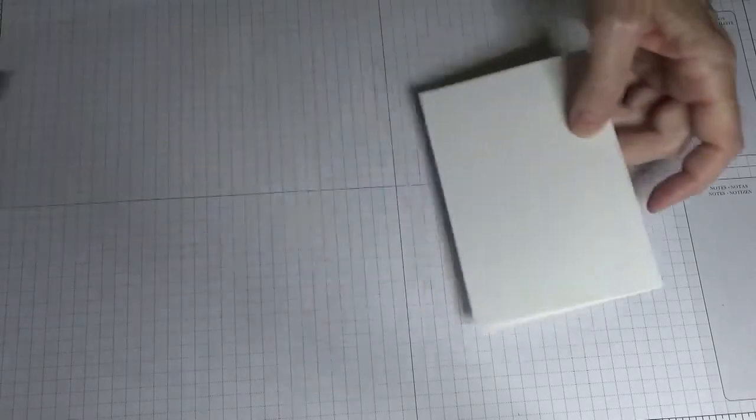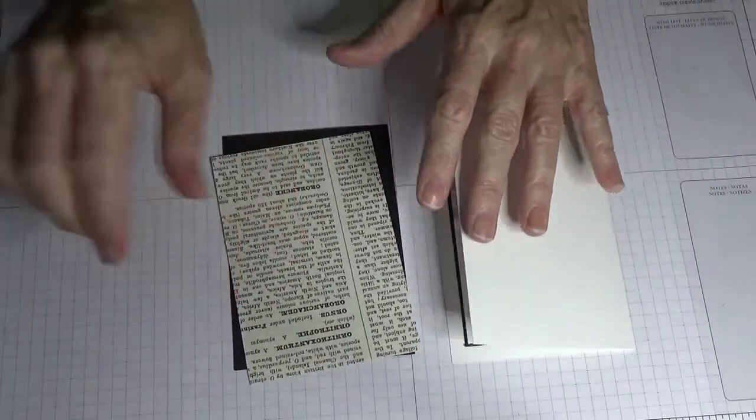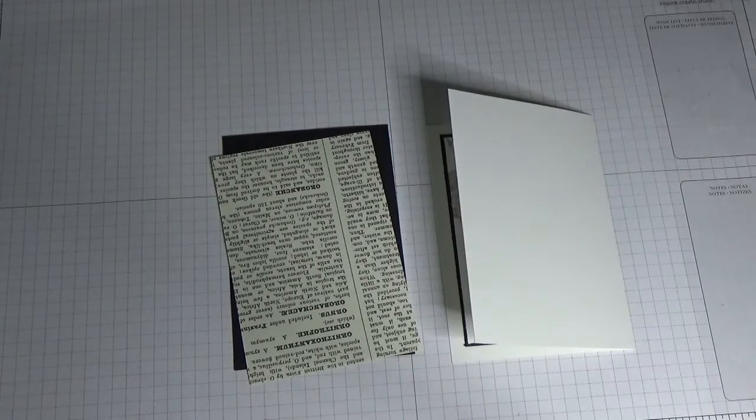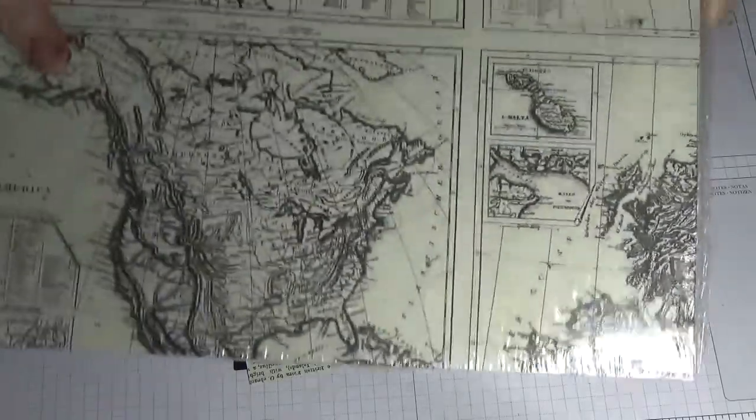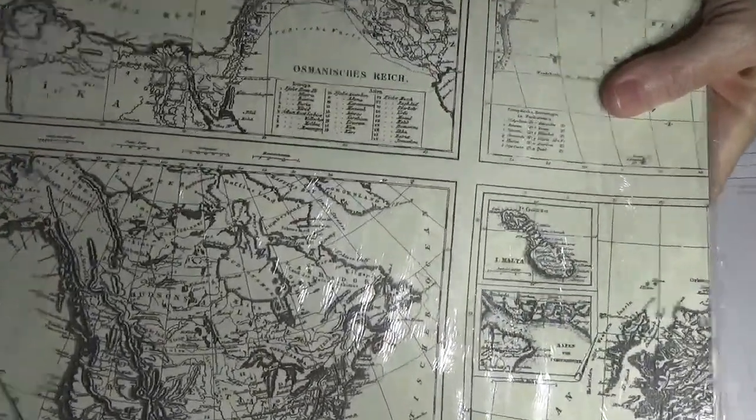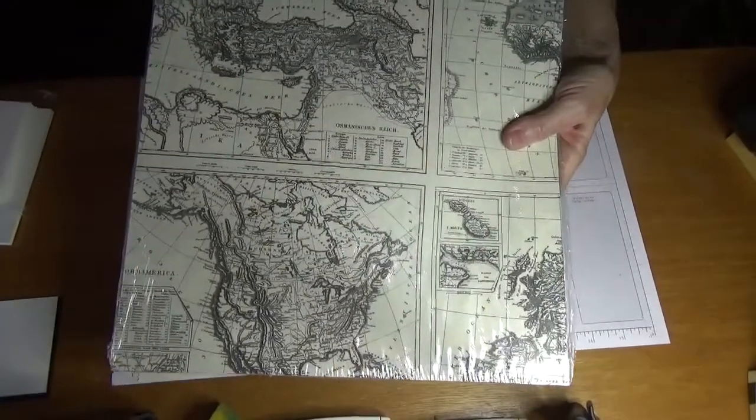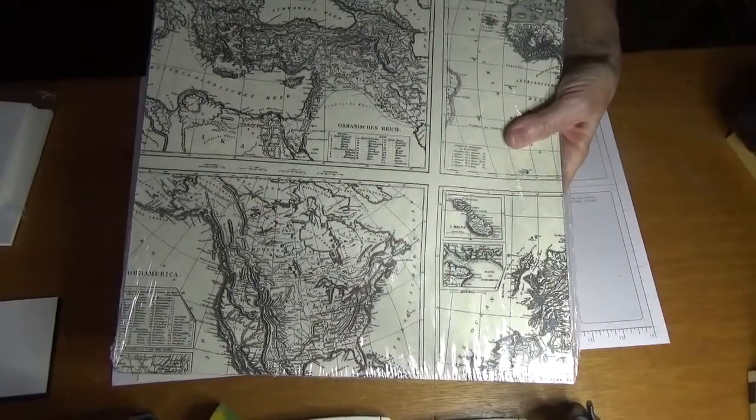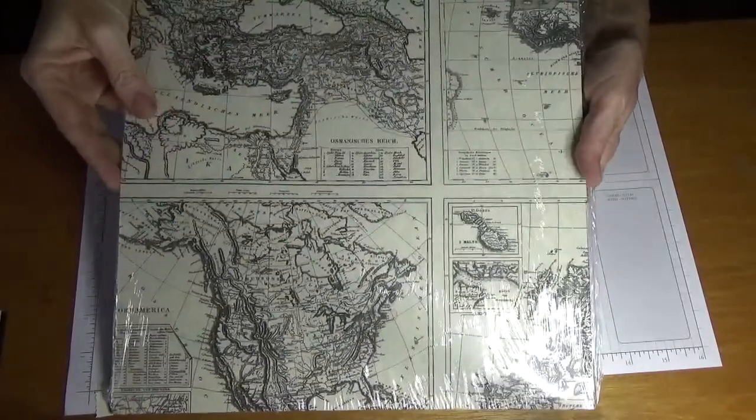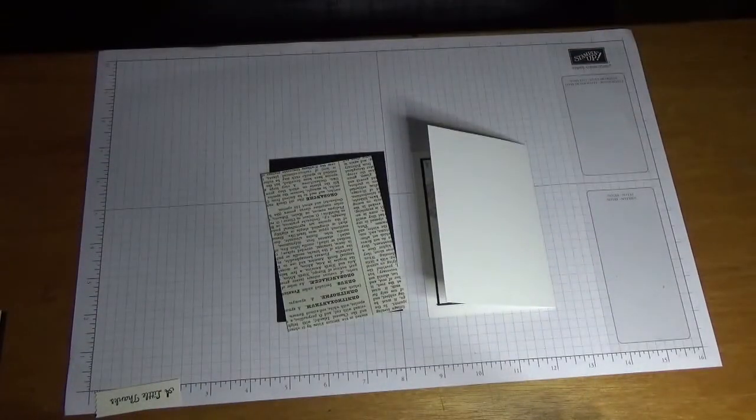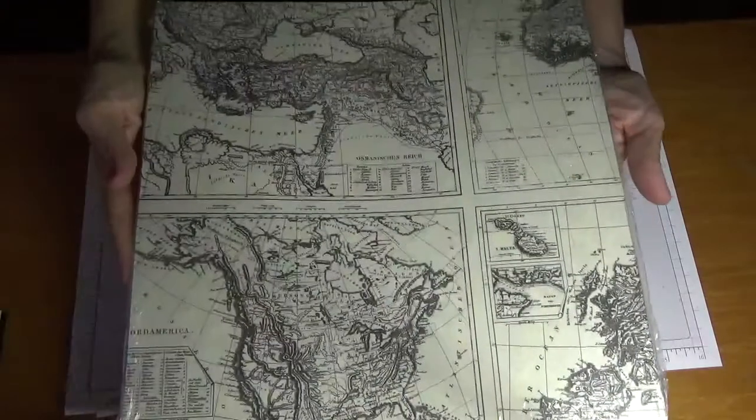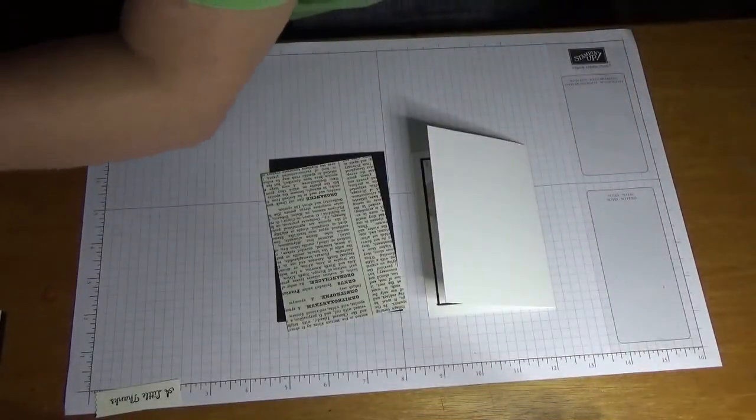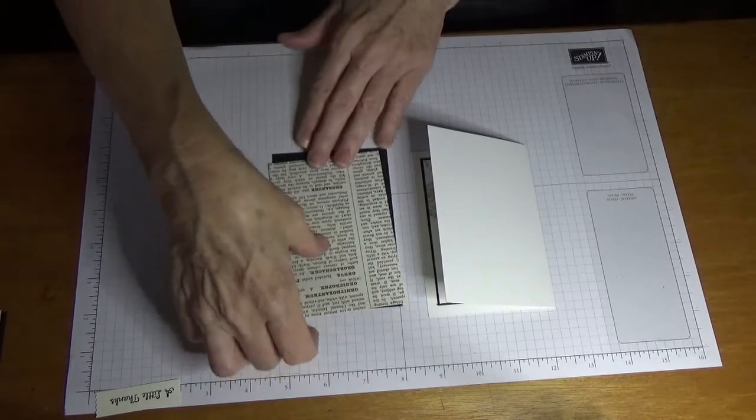So then for the front, the designer series paper I'm using is Typeset. Now if you want to get this one, you are limited to the time. You've only got to the end of this month to get it and then our new catalog comes out. So that is Typeset specialty designer series paper and you get 24 sheets of 12 inch by 12 inch, and it's really good designer series paper to have in your collection.